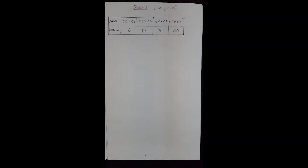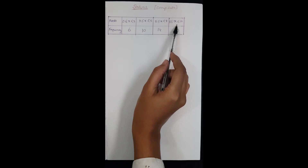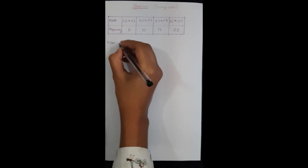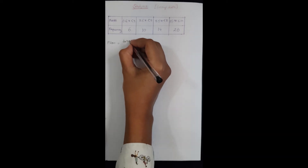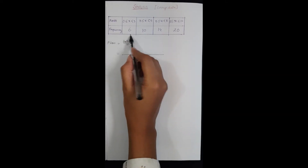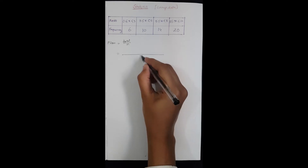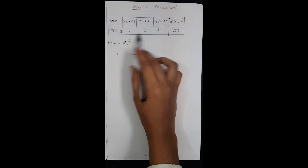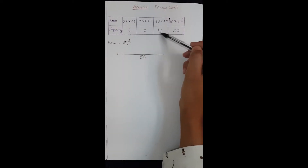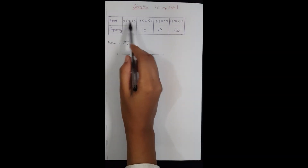This next example includes grouped data, where marks are given in a range. The mean equals total divided by N. N is 6 plus 10 plus 14 plus 20, which equals 50, so the total number of students is 50. But for total marks we cannot simply multiply both rows because each entry covers a range.